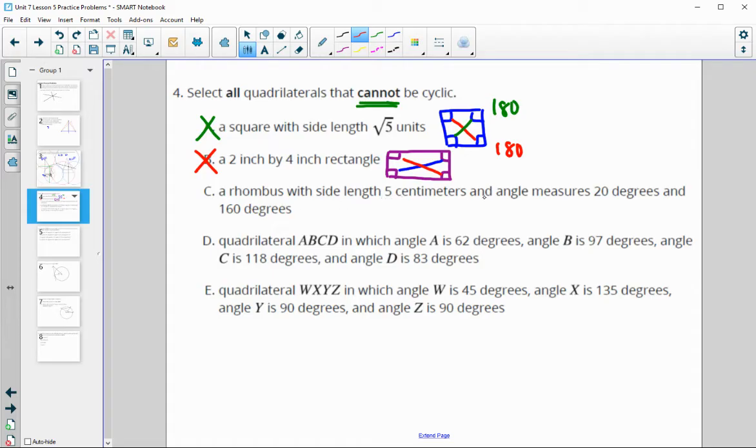A rhombus with side lengths of 5 centimeters and angles measuring at 20 and 160. A rhombus kind of looks like this, like a diamond. The angles across from each other are the same. So if this one is 20, this one is 20. Well, 20 plus 20 definitely does not equal 180. So this one is not cyclic. That's what we're looking for.